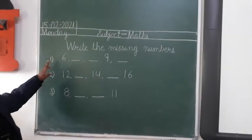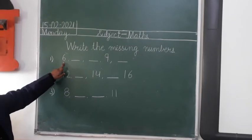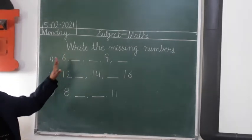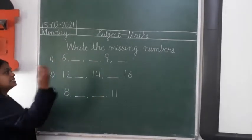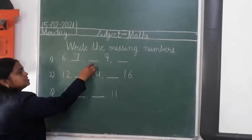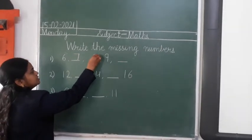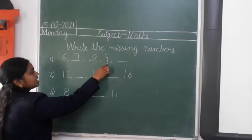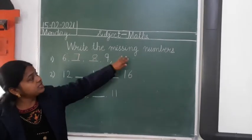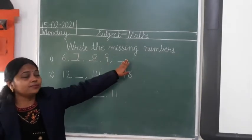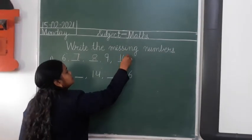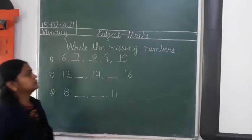First of all, tell me which number is this? Read: 6. And then what number do we write next? What comes after 6? Tell me: 7. I will write here 7. What comes after 7? 8. I will write here 8. And next is 9. 9 is already written over here. We will write the next one. This is 9 and then next will be 10. I will write number 10 here.